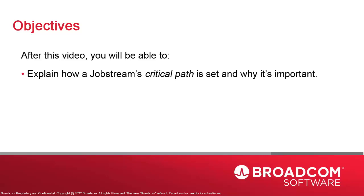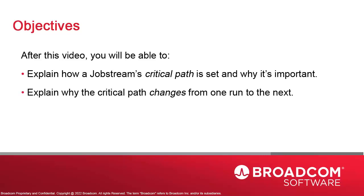In this video, we explain how AAI determines the critical path of a job stream run. For a given job stream, the critical path will usually change from run to run. This may seem counterintuitive. The critical path should be a constant — a process is made up of a string of business-critical jobs executing in a specific sequence, and so it's easy to assume that this is the critical path. In AAI, it's not the case.